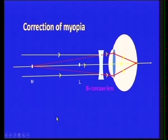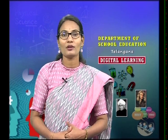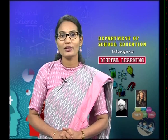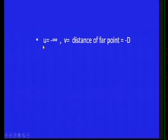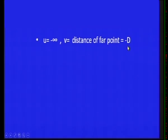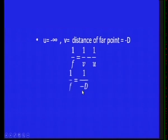How do we choose the correct concave lens? The object is at a longer distance, so object distance u = −∞. The image must fall on the far point, so image distance v = −D (negative by sign convention). Substituting into the lens formula: 1/F = 1/(−D) − 1/∞ = −1/D. Therefore, F = −D. The negative sign indicates a concave lens.